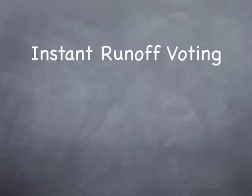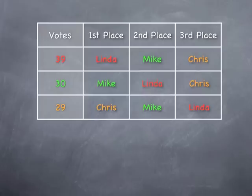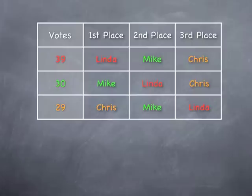Instant runoff voting: the case of the missing ballots. We have an election here that's going to use instant runoff voting to select the winner. We had 39 voters that selected Linda as their first place choice, Mike as their second place, and Chris as their third. Thirty voters had selected Mike as their first place with Linda as their second choice and Chris as their third, and 29 voters had Chris as their first place, Mike as their second place, and Linda as their third.